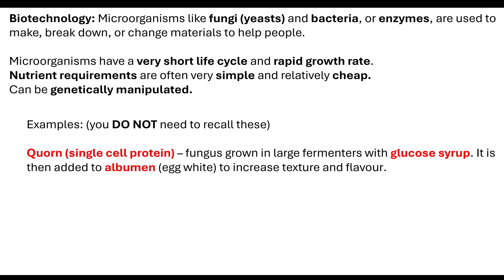Quorn is an example of a single cell protein. It's a fungus grown in large fermenters, linking back to batch or continuous fermentation. The food source given is glucose syrup, which they use to grow and carry out metabolic pathways. After growing to large numbers, they are added to albumin — egg white — then pressed together to increase texture and flavour for people seeking a meat substitute who don't eat animal products.